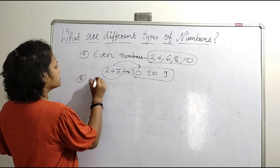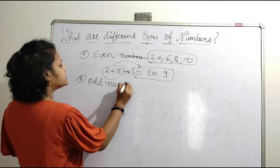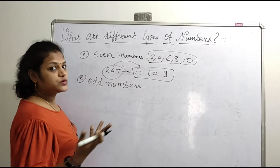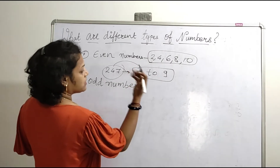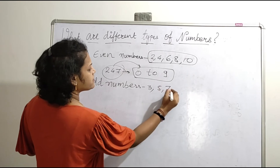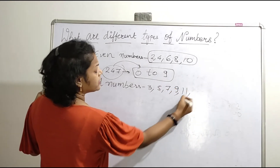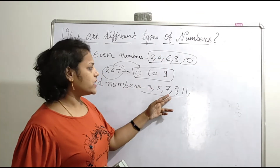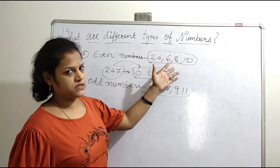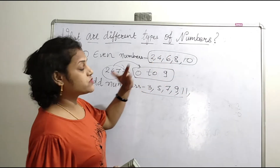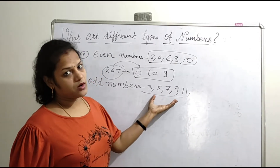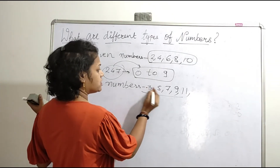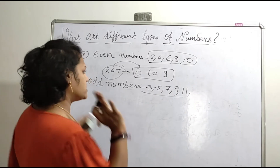Next, we will see about odd numbers. Odd numbers are those which are not exactly divisible by 2. For example, 3, 5, 7, 9, 11 are all odd numbers because none of them are divisible by 2. Odd numbers can also possess negative numbers — for example, minus 3 and minus 5 are also odd numbers.